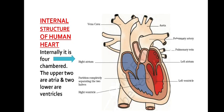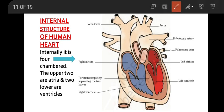If you study the internal structure of the human heart, it consists of four chambers. The upper two chambers are called atrium — singular atrium, plural atria. The lower two chambers are called ventricles. Atria are also called auricles.